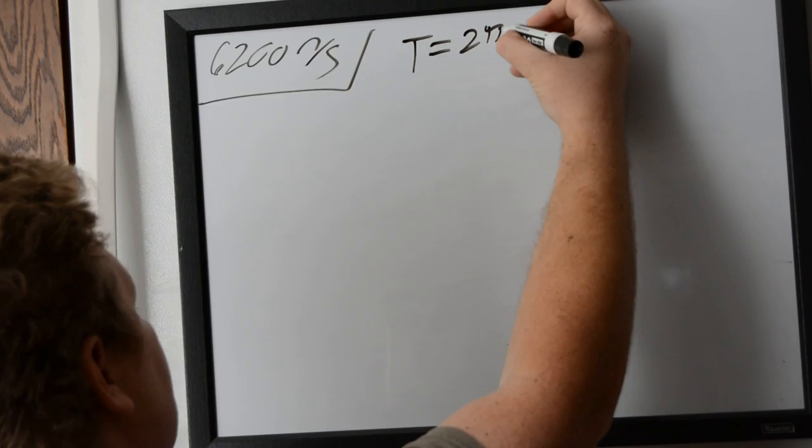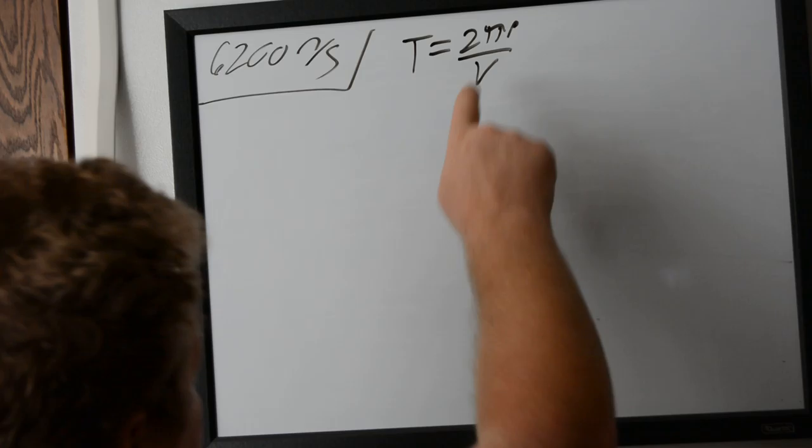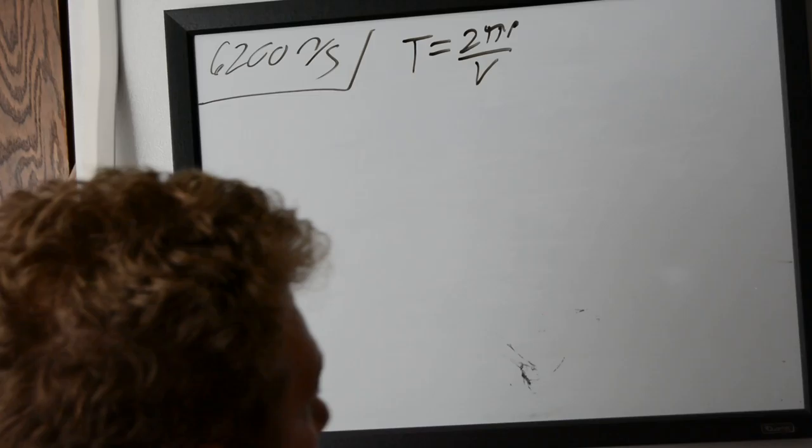So let's just go ahead and write that our period is equal to 2πr over velocity. We're given the orbital velocity, so we can use this particular equation, but we do not know our radius, our distance from the center of the Earth to our satellite.